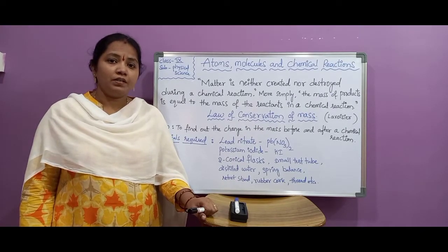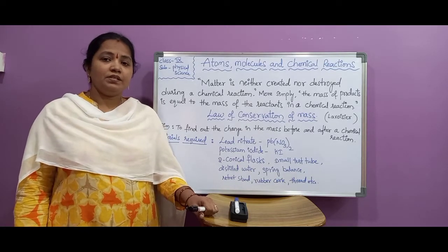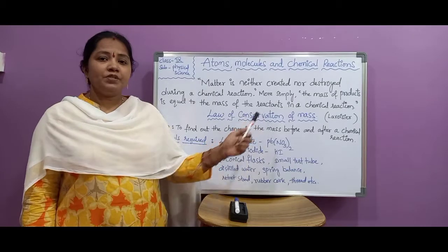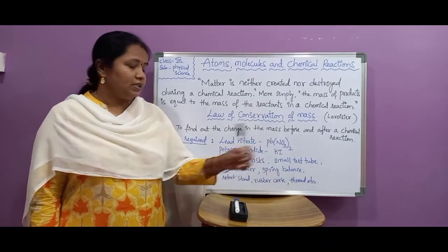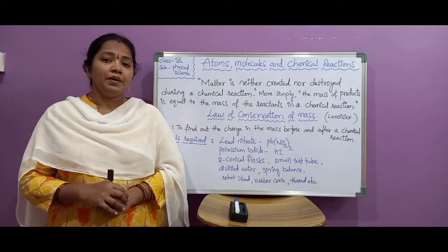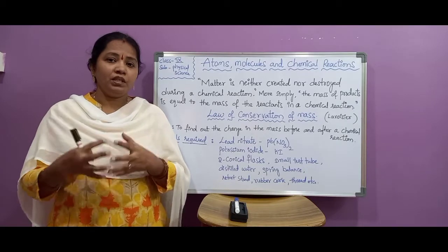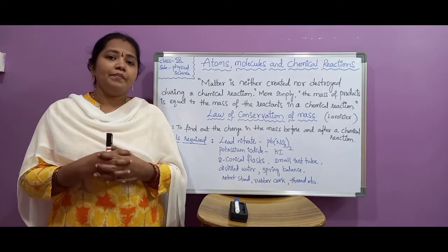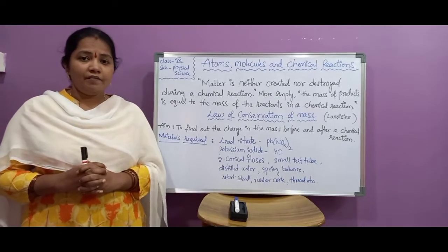Reactants and products — what do they mean? In any chemical reaction, the substances which are involved and undergo a chemical change are called reactants. The substances which are newly formed after the chemical reaction are called products. So products are the newly formed substances, and reactants are the substances which undergo the chemical reaction. Total mass of reactants is equal to total mass of products — that is the law of conservation of mass.